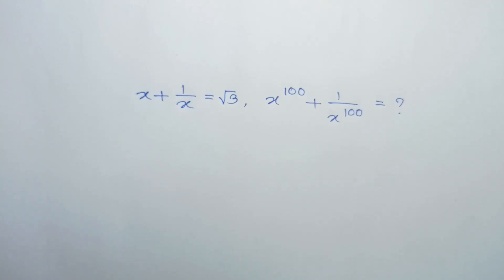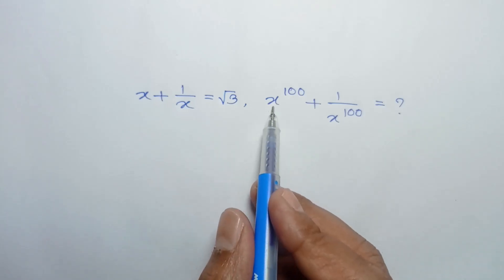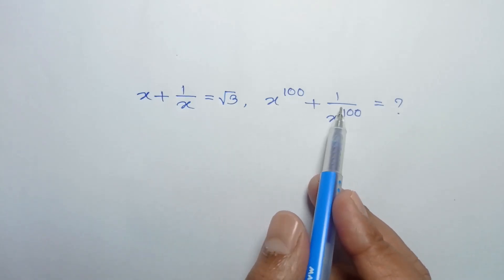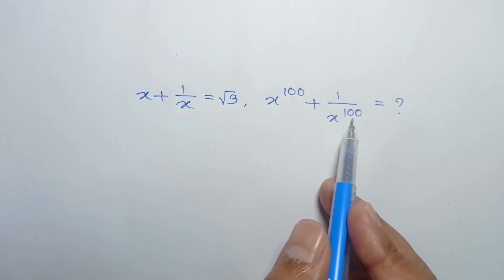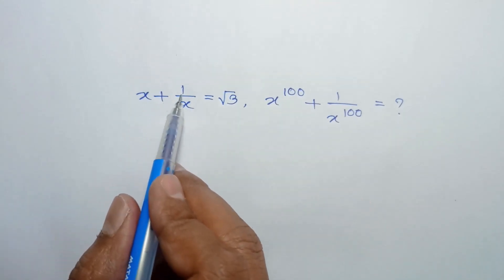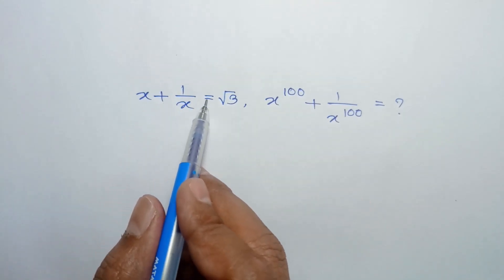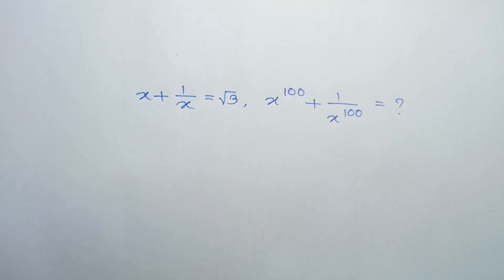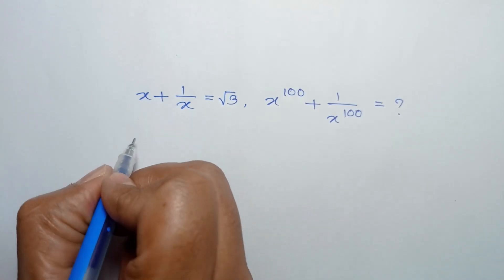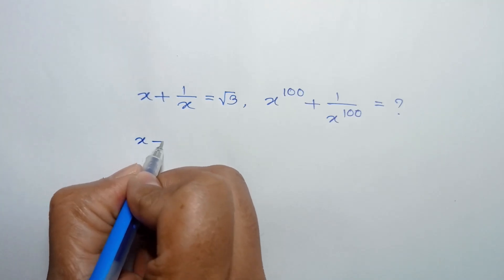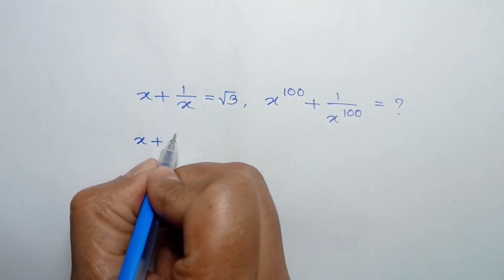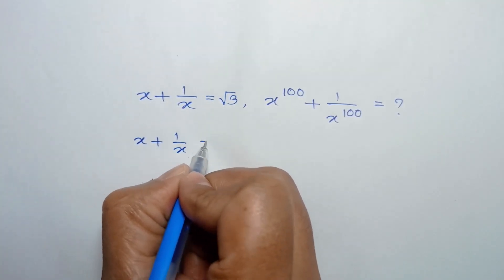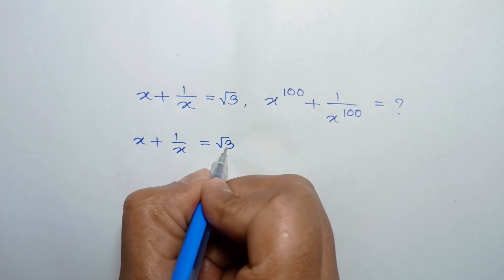Hi everyone. In this video I am going to show how to find the value of x to the power 100 plus 1 over x to the power 100, where x plus 1 over x is equal to square root of 3. We have given x plus 1 over x is equal to square root of 3.